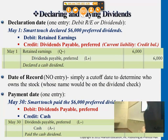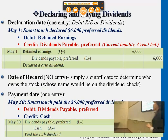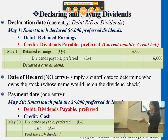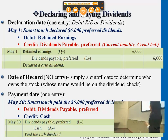Now on the date of record, the company basically just decides who the shareholders are that get the dividends, so there's no journal entry for the second date.